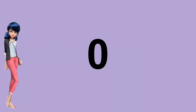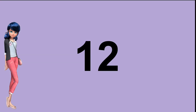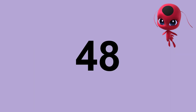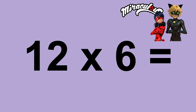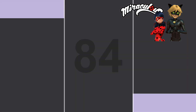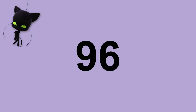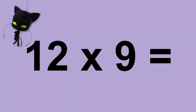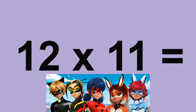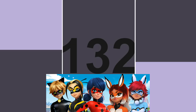Twelve times zero equals zero. Twelve times one equals twelve. Twelve times two equals twenty-four. Twelve times three equals thirty-six. Twelve times four equals forty-eight. Twelve times five equals sixty. Twelve times six equals seventy-two. Twelve times seven equals eighty-four. Twelve times eight equals ninety-six. Twelve times nine equals one hundred and eight. Twelve times ten equals one hundred and twenty. Twelve times eleven equals one hundred and thirty-two.